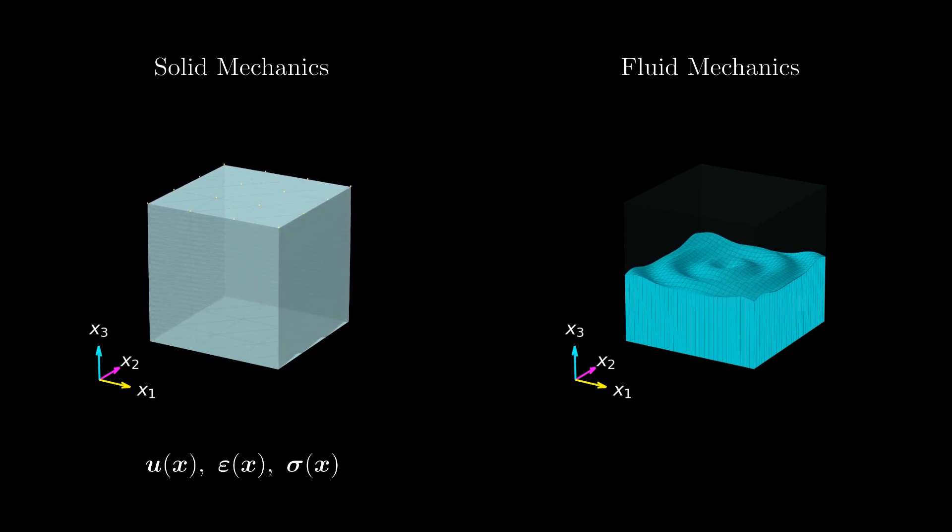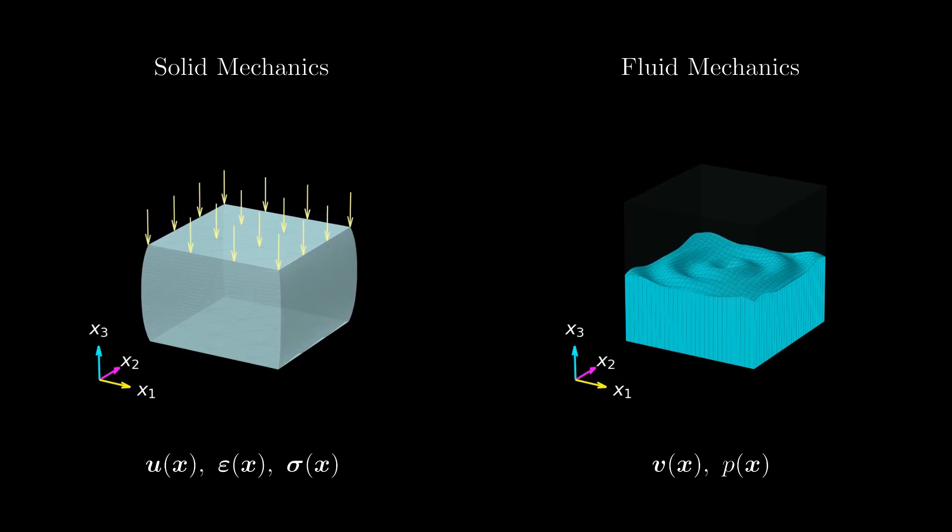In fluid mechanics, fields like the velocity field or the pressure field are more commonly used. Note that our matter being a continuum does not necessarily mean that the fields that describe the physical state of the continuum are continuous. There may be sudden changes of the state variables in space.